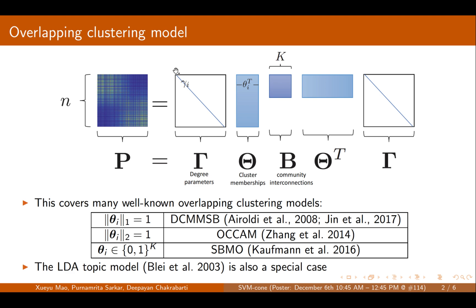For each node, there is a degree parameter gamma_i associated with it that encodes how popular that node is. There is also a cluster membership vector theta_i, where the entry theta_ij represents how likely node i can be in community J.